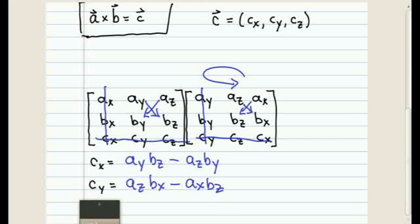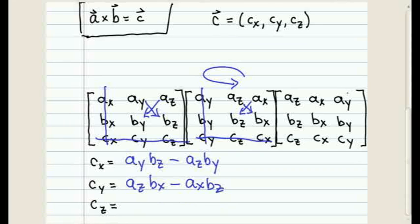And then finally, we just repeat the trick one more time. We now write a third matrix where again, we shift all the columns over to the left by one, and then the first column moves to the third position. So now we have the Z components here, the X components in the middle, and the Y components at the end of the matrix.